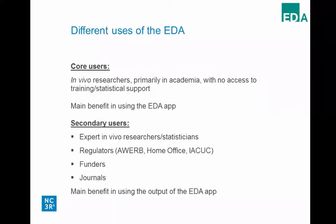The EDA can be used in different ways by different users. The core users we had in mind are in vivo researchers, primarily in academia, with little access to training or statistical support — these people would mainly benefit from using the EDA app itself to design their experiments. But there are also secondary users — expert in vivo researchers, statisticians, regulators, funders, and journals — who are very interested in the EDA not to use the app itself, but to see the output diagrams generated by researchers.